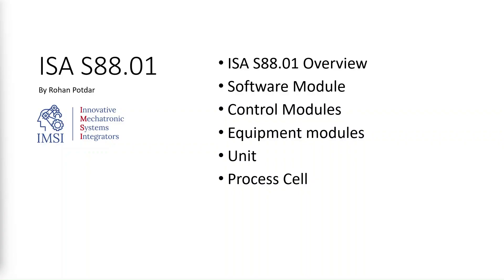So let's get started. In this tutorial we are going to look at the overview for ISA S88 software architecture standard. We are going to understand what software modules are, and then we are going to look at the four software module categories that are included in the ISA S88 standard.